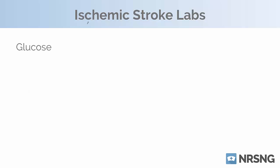The first lab to talk about is glucose. This is essential to know right away because hypoglycemia — blood sugar less than 70 — can mimic the symptoms of a stroke. It's really essential that we differentiate whether this person is having a hypoglycemic episode or truly having a stroke, because if it's hypoglycemia, we just need to give them D50. If the patient is presenting to the emergency department, glucose is part of the CMP or BMP, but if the patient is on the unit, the first thing you want to do before enacting stroke protocol is check a finger stick glucose.